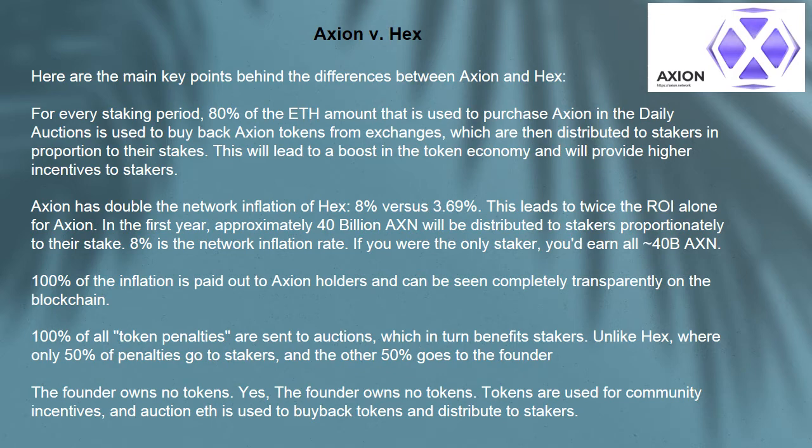100% of all token penalties are sent to auctions, which in turn benefits stakers. Unlike HEX, where only 50% of penalties go to stakers and the other 50% goes to the founder. The founder owns no tokens — yes, the founder owns no tokens. Tokens are used for community incentives, and auction ETH is used to buy back tokens and distribute to stakers.